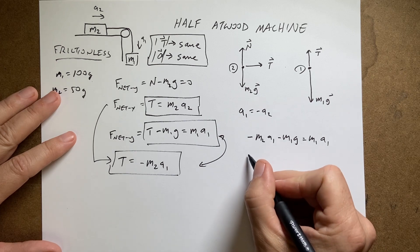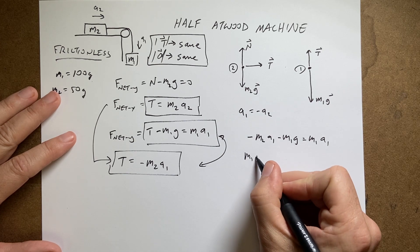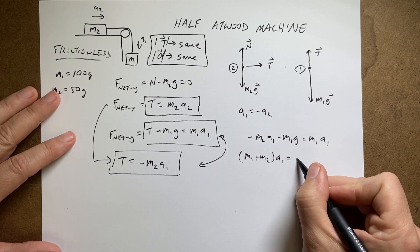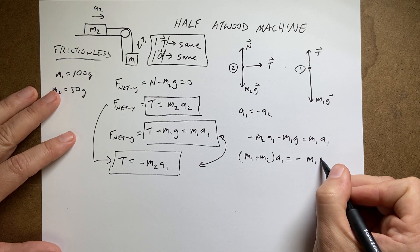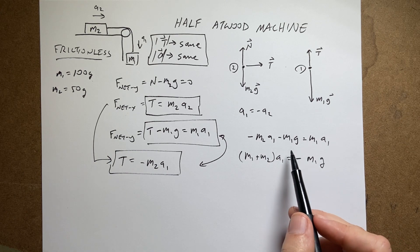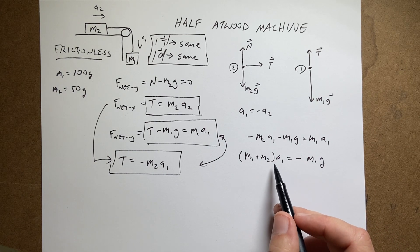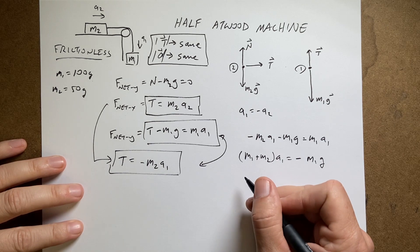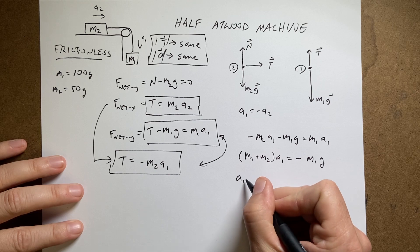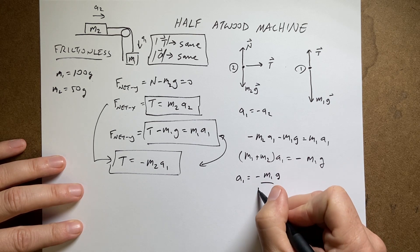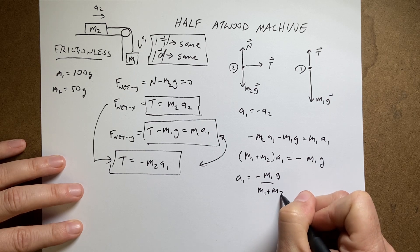So I'm going to add this term to both sides and I get m1 plus m2a1 equals negative m1g. Is that right? Let's see. So if I add that to both sides, it's positive. Yeah, I think that's right. And that factored out the a1. And I'm going to divide both sides by m1m2. Yeah, this is right. So I get a1 equals negative m1g over m1 plus m2.